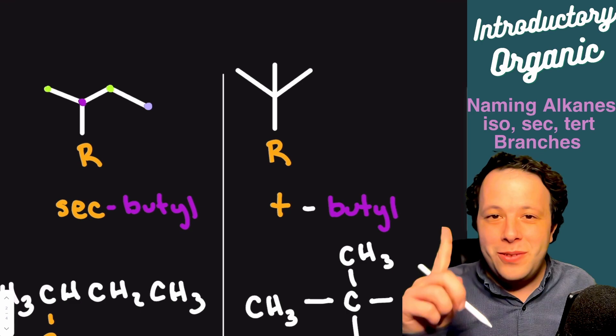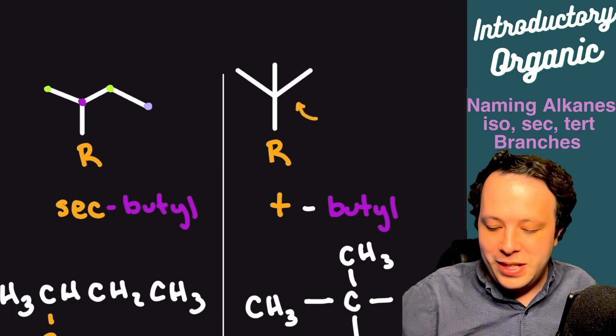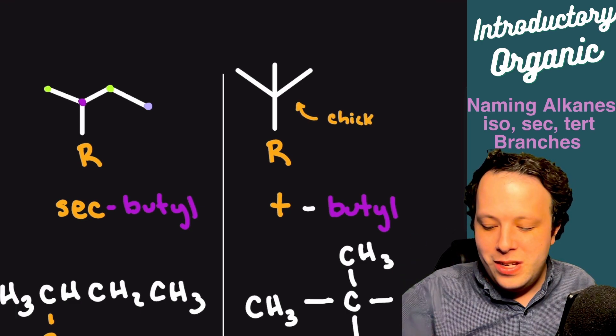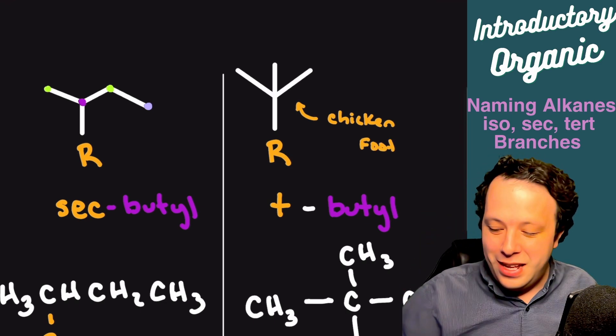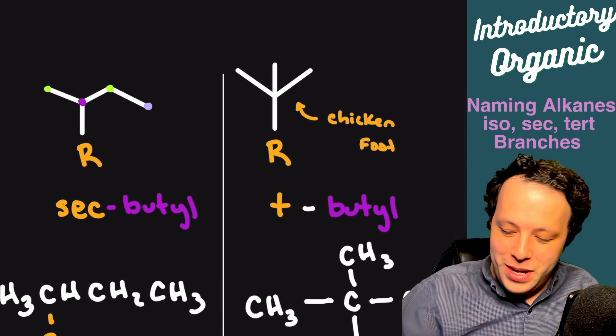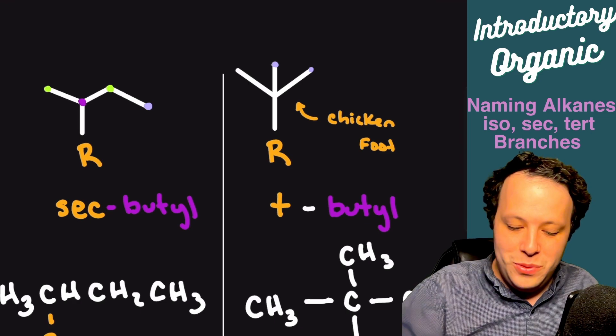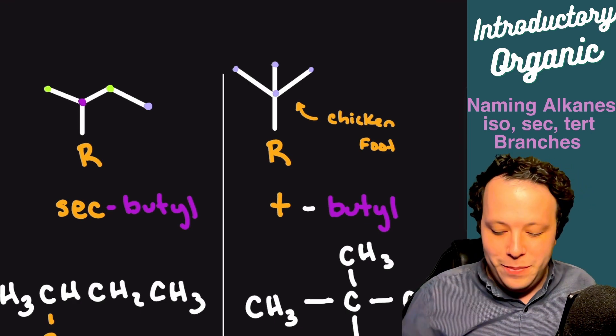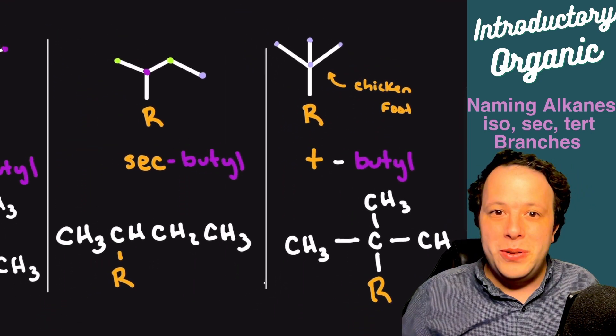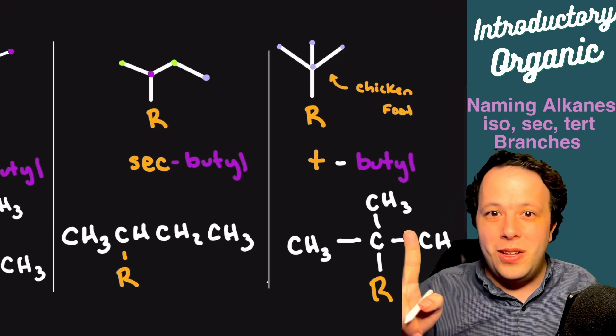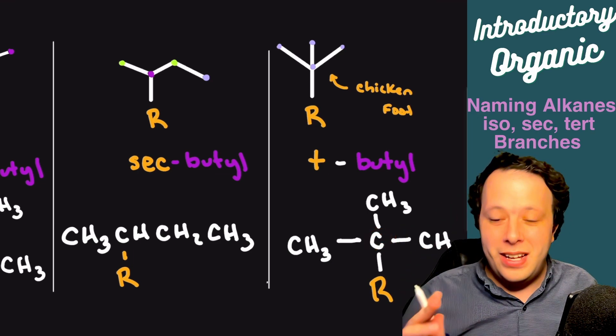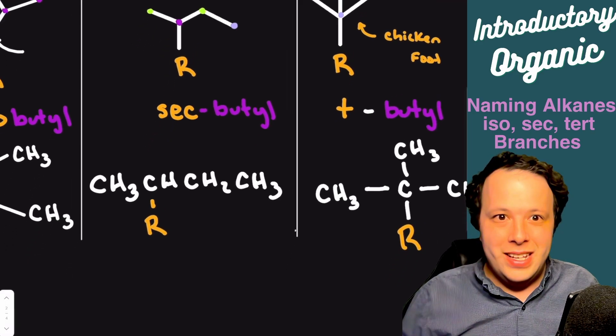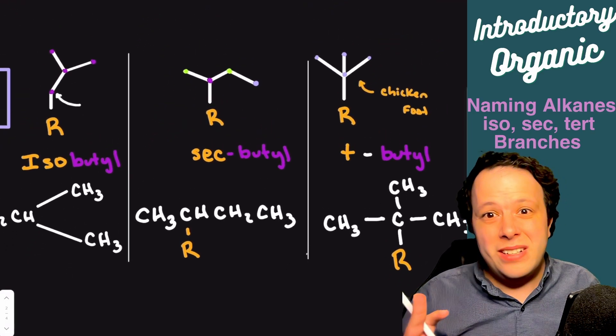The last one reminds me of a chicken foot or a bird foot, and you can see the three little toes pointing up. You have one, two, three, and then the fourth one in the middle. That one is tert-butyl. It has CH3 groups all around the carbon, and each one of them is its own unique shape.